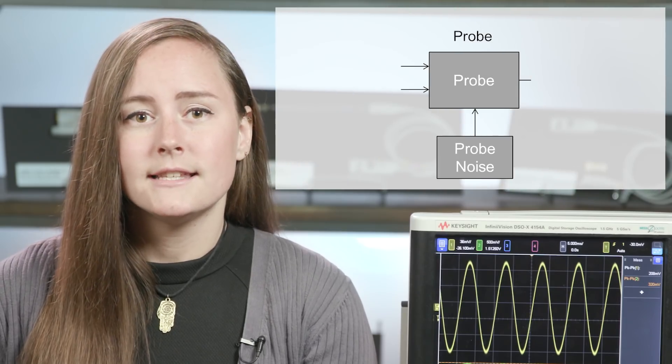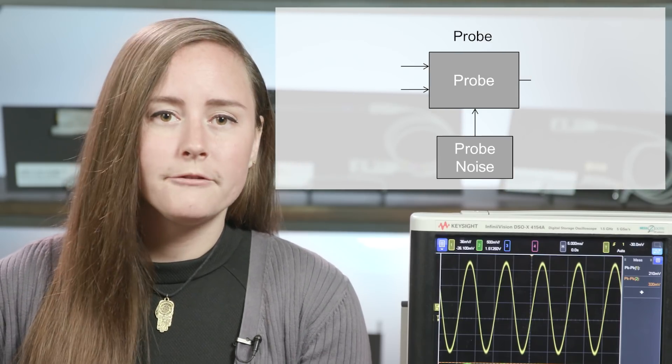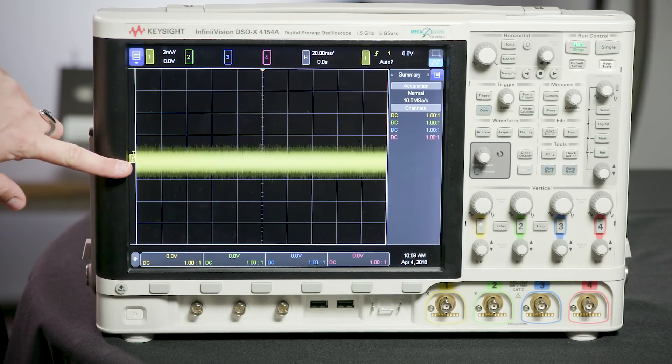The first thing we'll look at are the consequences of system noise. The system I'm referring to is the probe and the oscilloscope being used together. The sources of noise in the system can come from the probe's amplifier and the oscilloscope's attenuator. Let's start out by looking at the noise floor of an oscilloscope with no probe attached. We can see pretty steady noise on the screen.